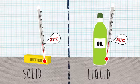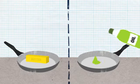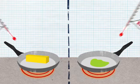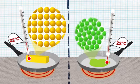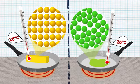But what happens at a higher temperature? Let's transfer some energy into the oil and butter to find out. We can see that the temperature or the average kinetic energy is increasing for both substances.